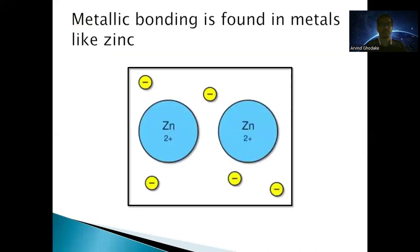Metallic bonding is found in metals like zinc. In the diagram, we can see two positive ions of zinc (Zn) and surrounding electrons. The two ions are bound to each other through these delocalized electrons — that is called metallic bonding.